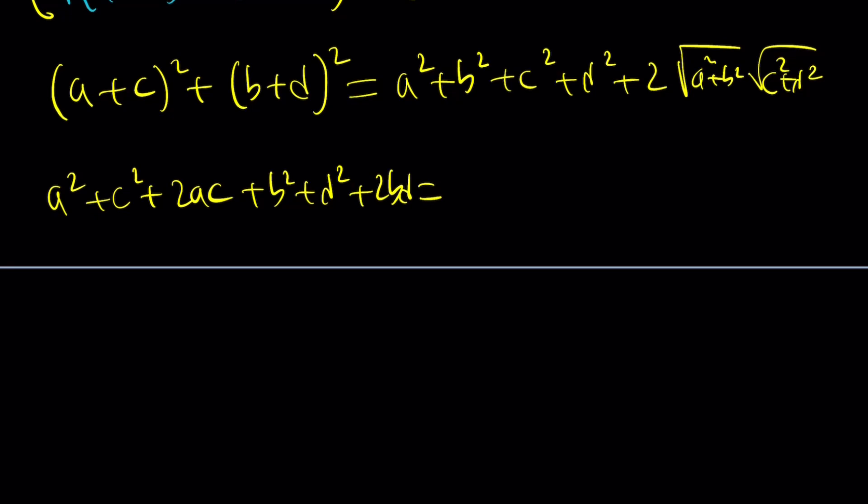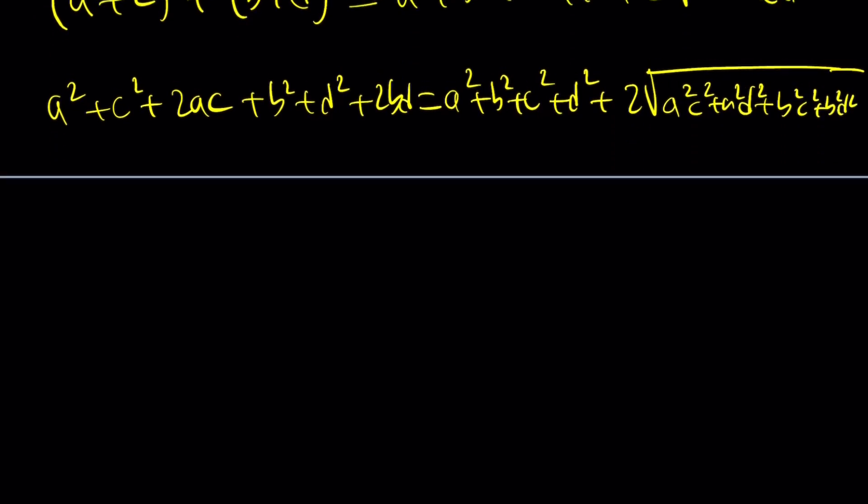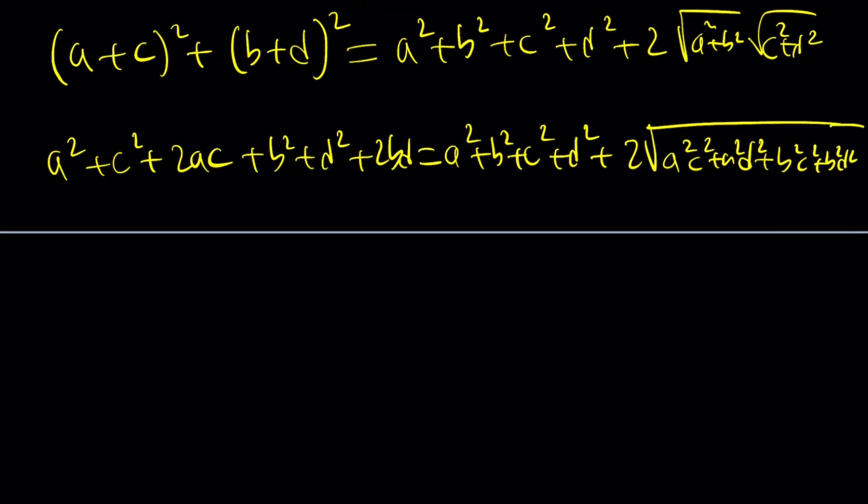And then we're going to write this. A squared plus B squared plus C squared plus D squared plus two times this. And let's go ahead and distribute it because we're going to have to do it anyway. Now, take a look. A lot of things are going to cancel out.